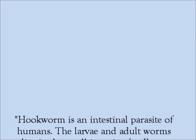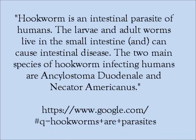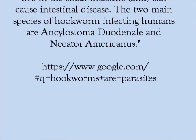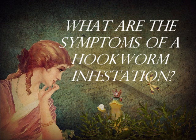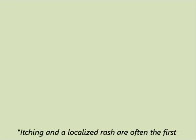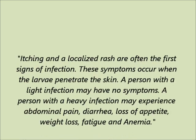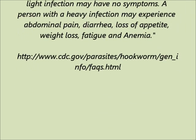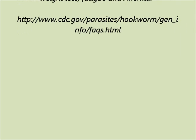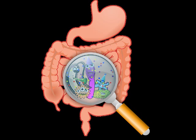Hookworms are part of the zoonotic disease category, meaning diseases that can be transferred from humans to animals and vice versa. The larvae and adult worms live in the small intestine and can cause intestinal diseases. There are two main species of hookworms that infect humans. Symptoms may vary, but the first symptom is really itching and a rash. However, if someone has a heavy infection, symptoms can include abdominal pain, diarrhea, appetite loss, weight loss, fatigue, and anemia.